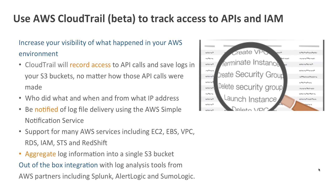We've just introduced the great new feature Amazon CloudTrail, currently in beta, which will help you track access to the Amazon APIs and calls to the Identity and Access Management system. It increases your visibility of what has happened in your AWS environment. CloudTrail records access to APIs and IAM and saves logs of that access in your S3 bucket, no matter how those calls were made. It helps you understand who did what, when, and from which IP address. You can receive notifications via Amazon Simple Notification Service when new logs are ready, and you can immediately integrate these logs with tools like Splunk, Alert Logic, and Sumo Logic.